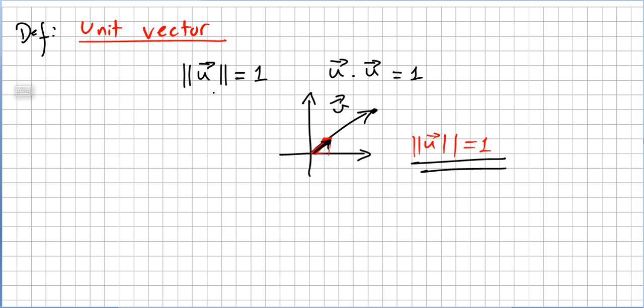So a unit vector is a vector that has length 1, meaning that u dot u equals 1.